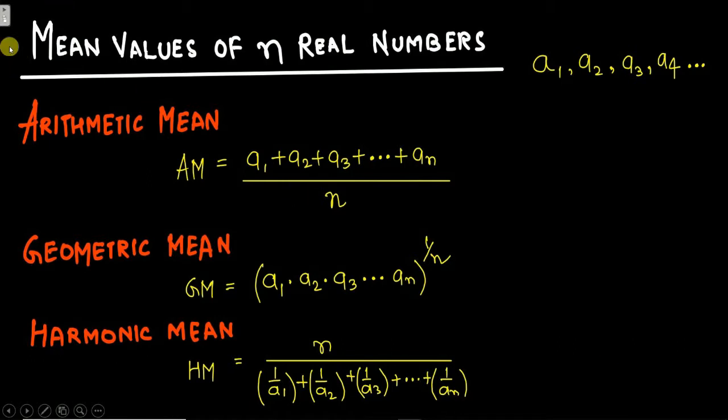Let's talk about the mean values of n real numbers. Let us consider we have some n real numbers say a1, a2, a3 and so on. We are interested to find what is the arithmetic mean, what is geometric mean and harmonic mean. Whenever it is talked about calculating the mean values of any real numbers then three possibilities arise.